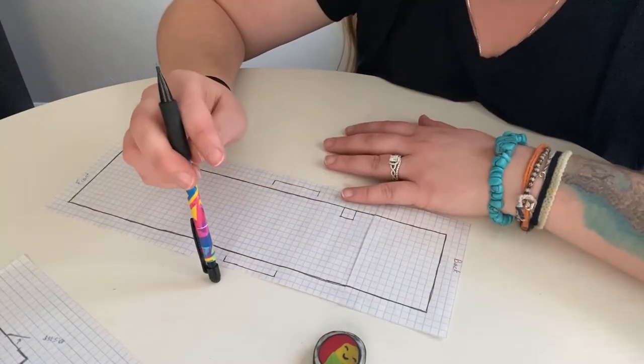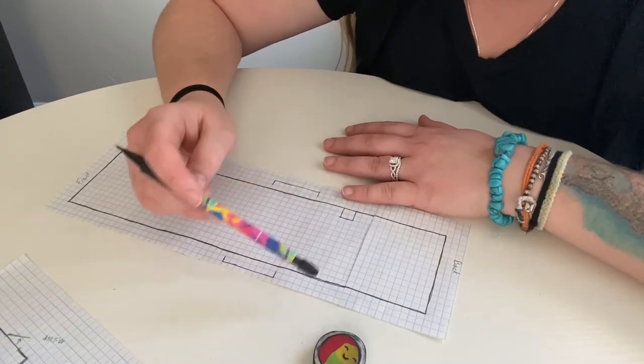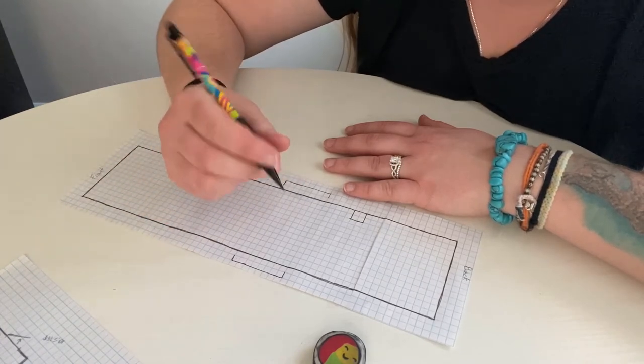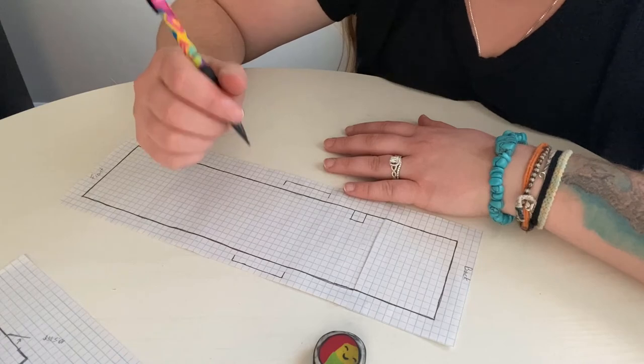So, we'll cut out separate shapes for all of our furniture. Like our bed, our washer-dryer combo, refrigerator, sink, couch, and maybe a wood stove.